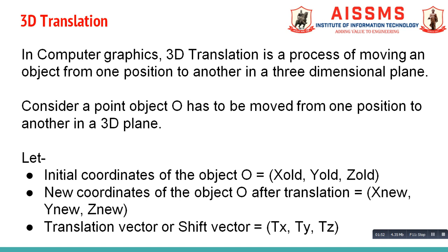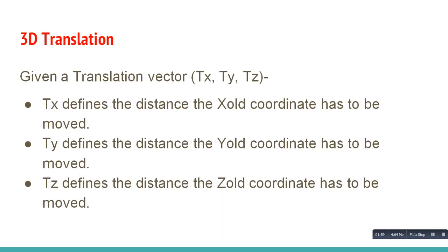The translation vector or shift vector is TX, TY, TZ. TX defines the distance the X old coordinate has to be moved. TY defines the distance the Y old coordinate has to be moved. And TZ defines the distance the Z old coordinate has to be moved.